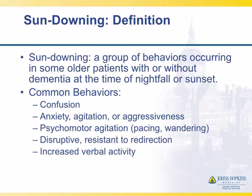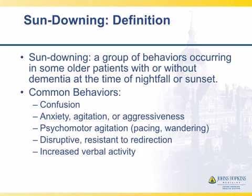Sundowning is a group of behaviors that occur in older patients, with or without dementia, really at the time of nightfall or sunset. They can be confused, agitated, and aggressive. They can have pacing, wandering, disruptive behavior, and increased verbal activity. We tend to get these consults from surgical services. You want to make sure not to use a benzodiazepine — that will just worsen the syndrome. If necessary, you can suggest some of the antipsychotics. They will have agitation, anxiety, and some difficulty with concentration.